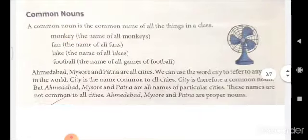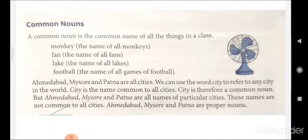What is a common noun? A common noun is the common name of all the things in a class. The name which we use in common is considered as a common noun. For example, Monkey is the name for all monkeys; Fan is the name for all fans. So here, we use the word which is common for all types and which explains the entire class.